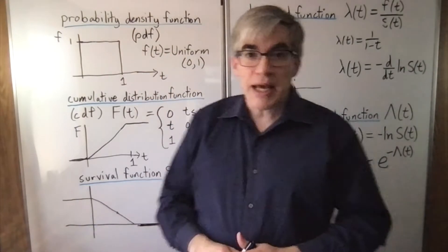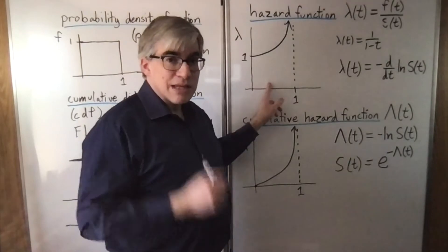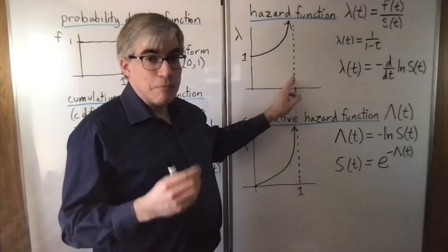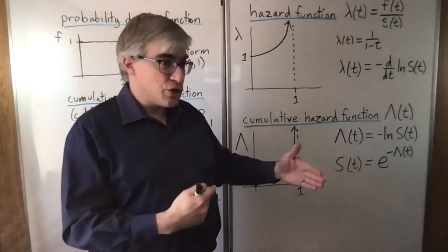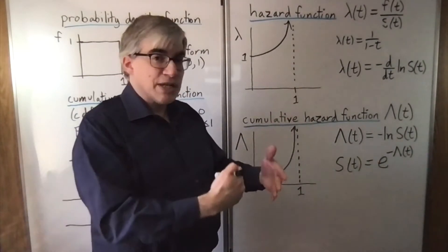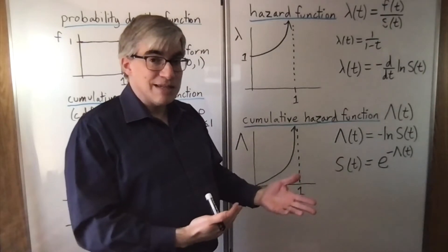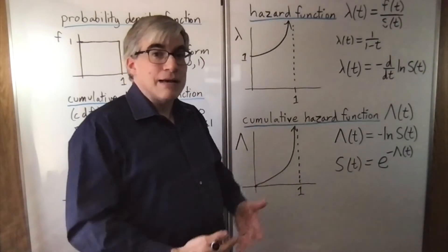But if you take into account that the bus has not shown up yet, it is getting more and more likely that the bus will arrive soon, because I said it's going to show up sometime in the next minute. Forty seconds have gone by. We're into the last 20 seconds. The probability per unit time is actually climbing.